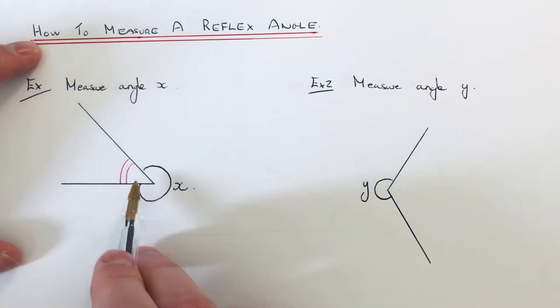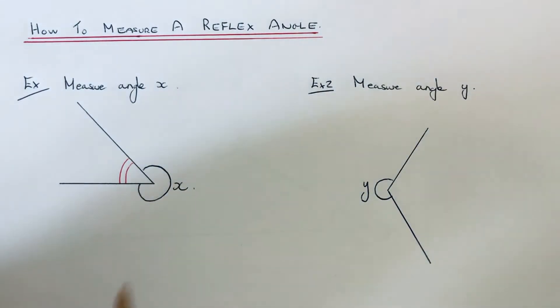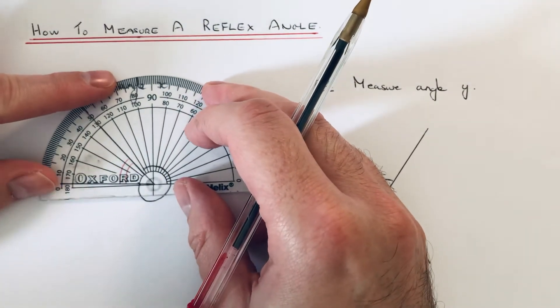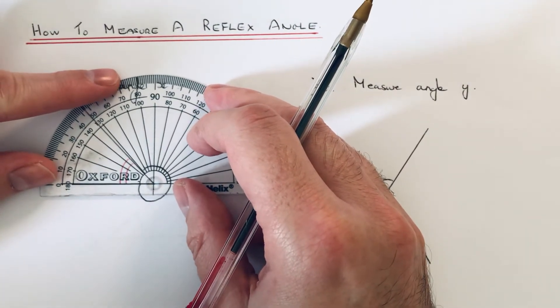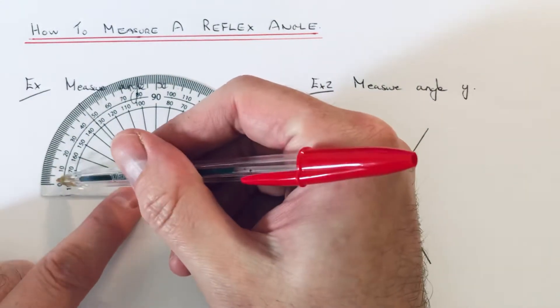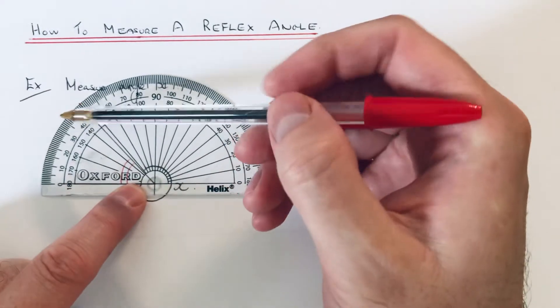angles around a point add up to 360. So if you get your protractor, we're going to put the center of the protractor on the corner of our angle, so the outside zero is on the baseline, so we've got